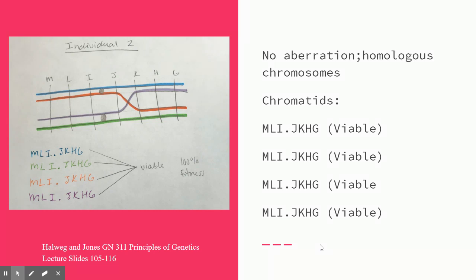Here, we see the crossover between loci J and K. Unlike individual one, this individual will produce four viable chromatids. They have also been color coded here for an easier visual.